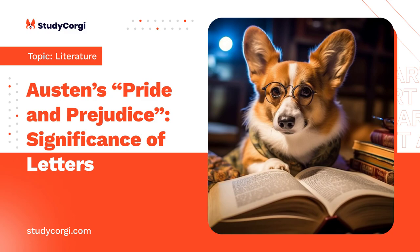Correspondence is the main literary approach that the author uses in this novel by having the characters continually write to one another. It can be noted that there were letters written by Mr. Collins, Elizabeth Bennett, Mr. Darcy, Jane, and Lydia, all of which reveal details about the personality traits of people within the society. Austen adopted this technique and naturally wove her series of letters into a dialogue and description of events.